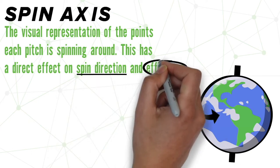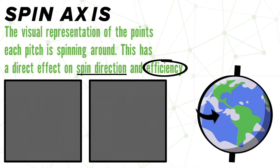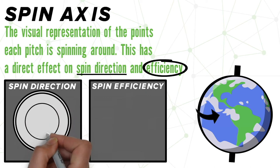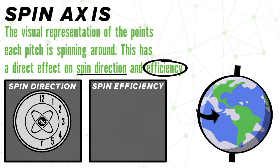Spin axis has a direct effect on both spin direction and spin efficiency. Let's focus on spin direction first, as this may be the one we are all more familiar with.